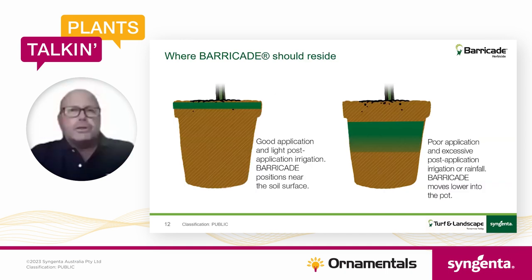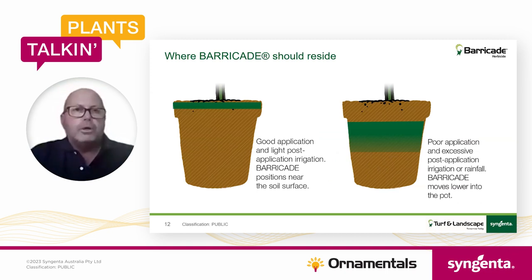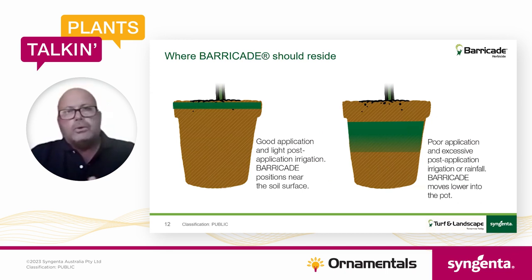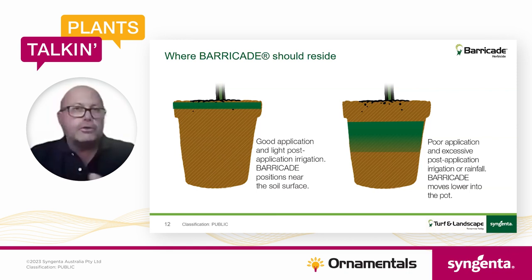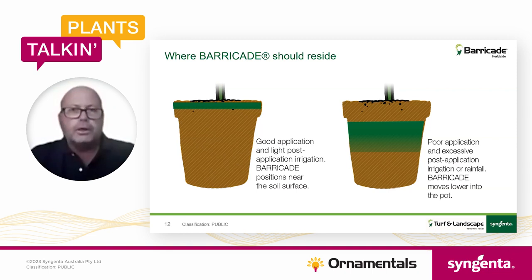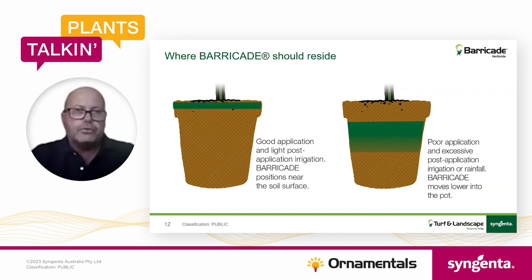Barricade sits at the surface, and weed seeds can be blown in and sit on that surface to start germinating — that's where we need that zone of activity. When applying it, we look at water volume, equipment, and nozzles, and then follow up with some irrigation afterwards to position it where we need it. If we're not careful with application — too high a water volume, not considering soil types, or applying too much irrigation or receiving rainfall within 48 hours after applying Barricade — there is a chance it could move and we won't get those results.